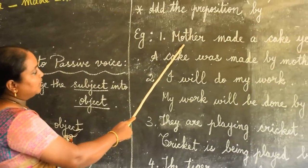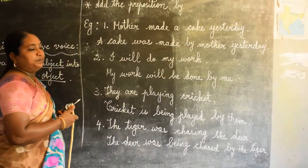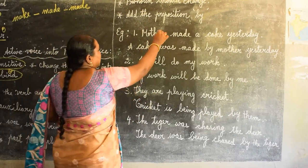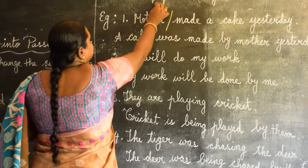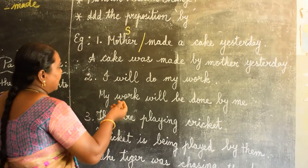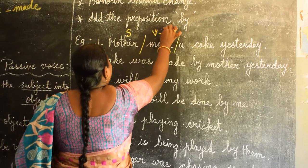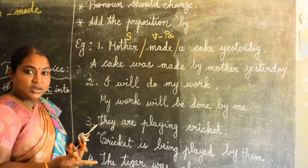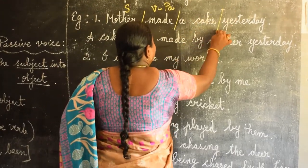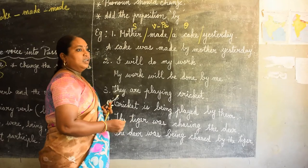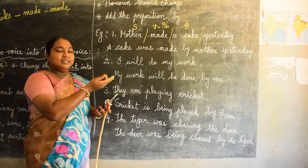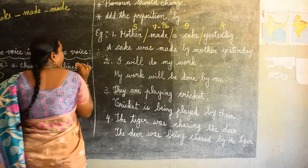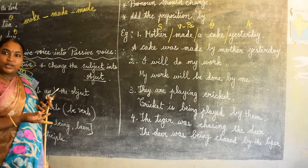Example 1: Mother made a cake yesterday. What we have to do first is view the pattern. Mother is the subject. Made — it is an action, the verb is in the past form. What did mother make? A cake. A cake is answering the question what, so it is the object.